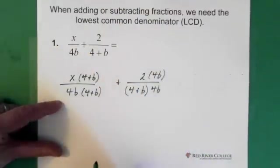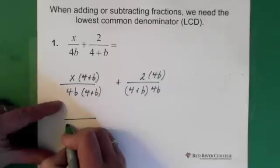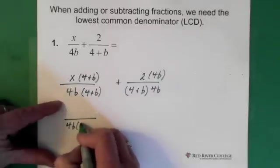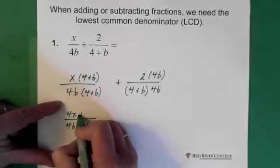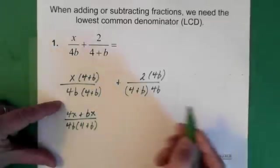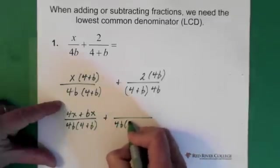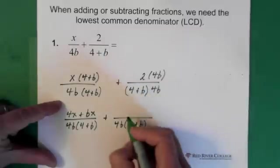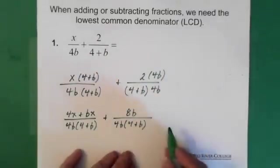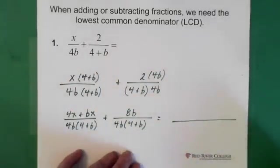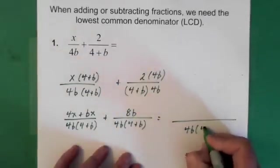Now we have our denominator. So now we have our denominator and I'm not going to bother multiplying through there. So in the denominator, we have 4b times 4 plus b. And in the numerator here, we have 4x plus bx.